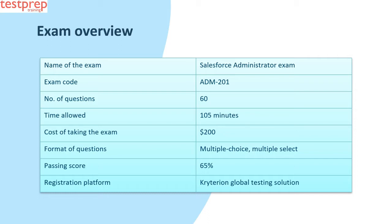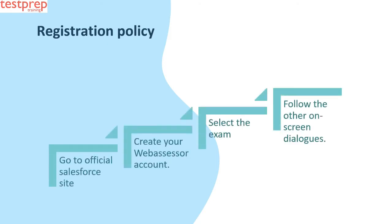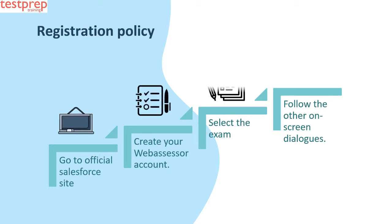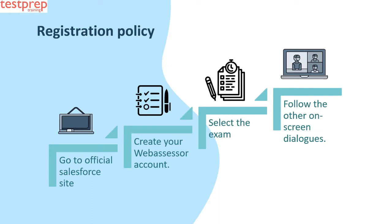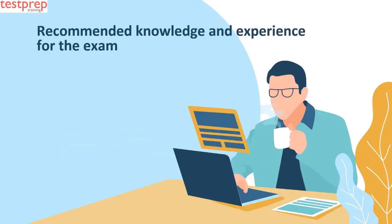You can take the exam at a proctored on-site testing center or through a proctored online method. There are no prerequisites for the exam; however, Salesforce recommends having knowledge of some basic concepts. For registration, go to the official Salesforce site, create your web assessor account at Criterion Global Testing Solution, select the exam, and follow the on-screen instructions.